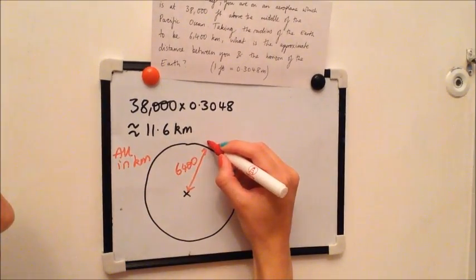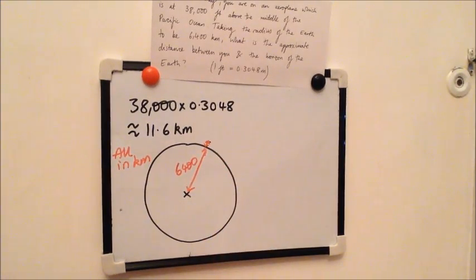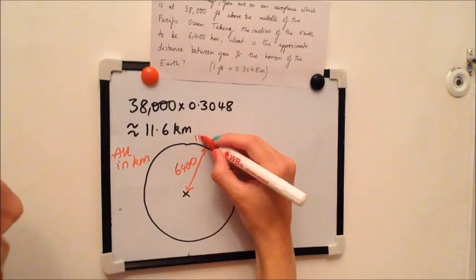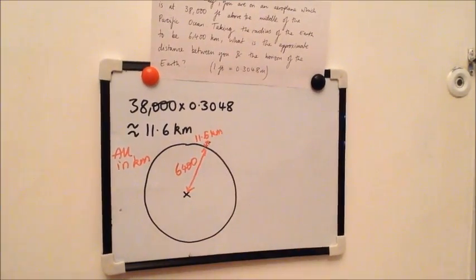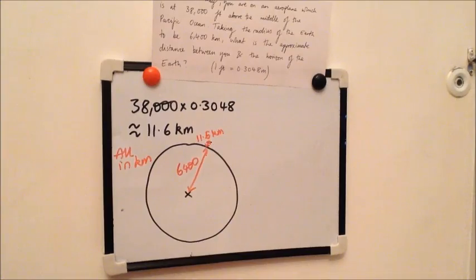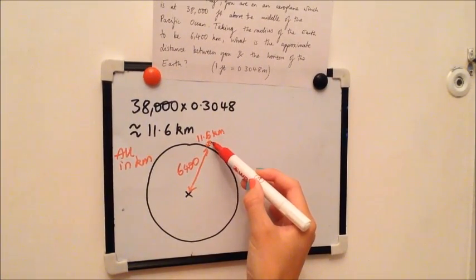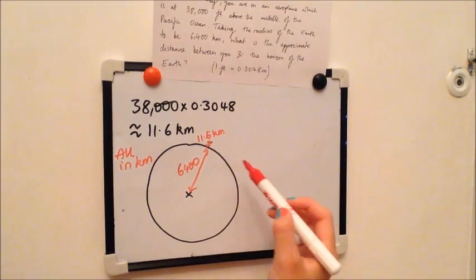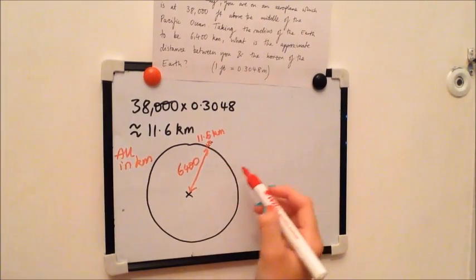And then the distance from the plane to the Pacific Ocean is, as we calculated here, 11.6 kilometres. So now I need to think about where the horizon is. The horizon is the line of sight from where you are in the aeroplane to the furthest point that you can see.